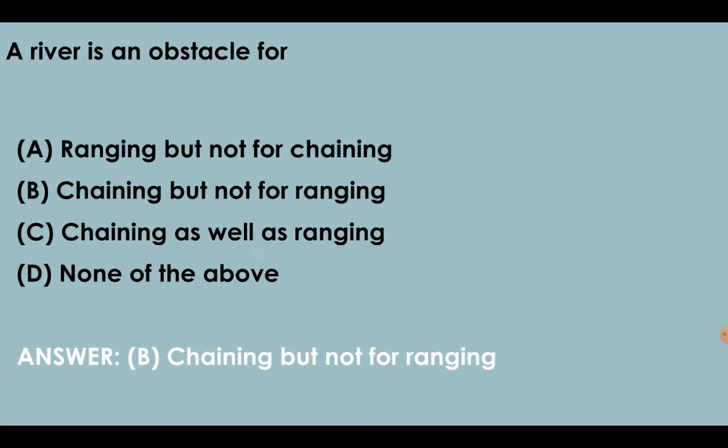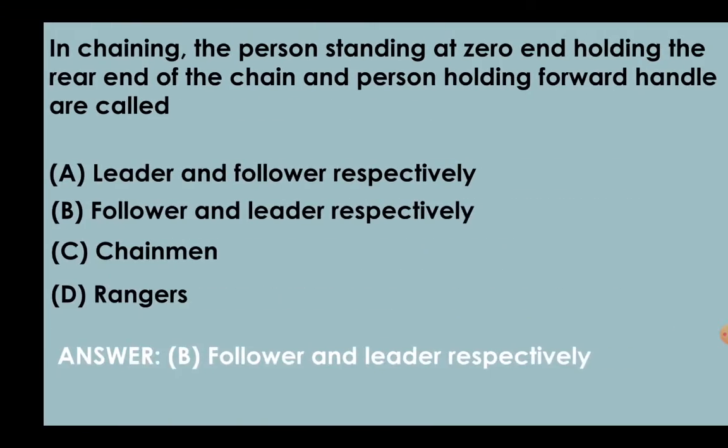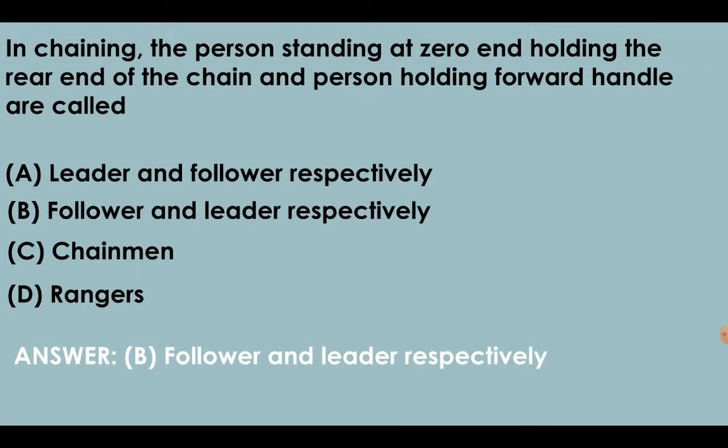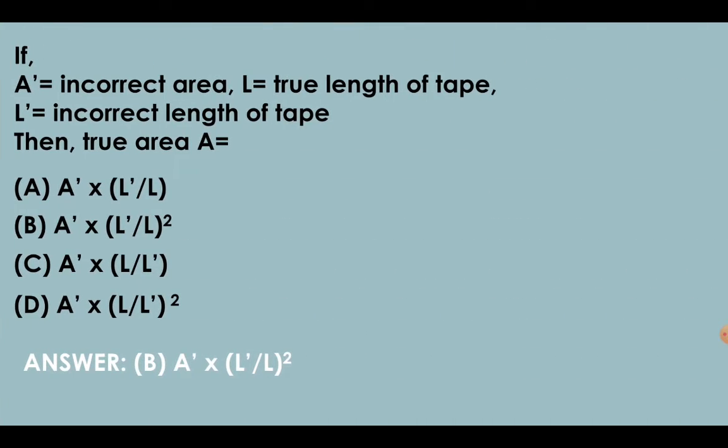A river is an obstacle for chaining but not for ranging. In chaining, the person standing at zero end holding the rear end of the chain and person holding forward handle are called follower and leader respectively. If A dash is incorrect area, L is true length of tape, L dash is incorrect length of tape, then the true area capital A is given by A dash into square of fraction of L dash and L.